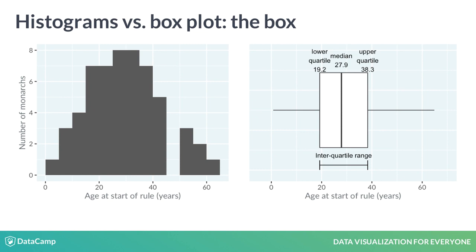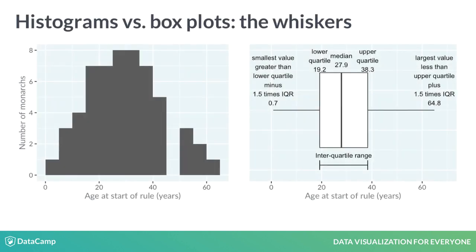Likewise, the upper quartile is the age where three-quarters of the monarchs started ruling below this age. The difference between the upper quartile and the lower quartile is called the interquartile range. The horizontal lines, known as whiskers, have a more complicated definition. Each bar extends to one and a half times the interquartile range, but then they are limited to reaching actual data points. In practice, you can think of the whiskers as extending far enough that anything outside of them is an extreme value.